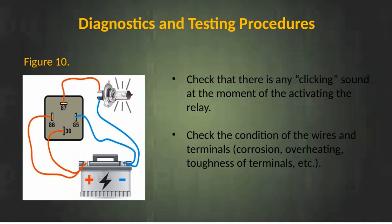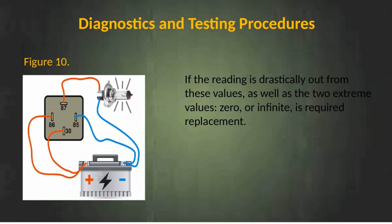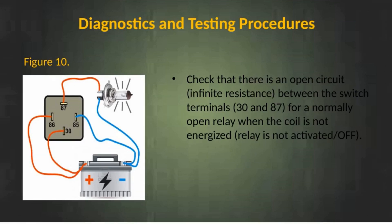Diagnostics and testing procedures. Check that there is a clicking sound at the moment of activating the relay. Check the condition of the wires and terminals for corrosion, overheating, toughness of terminals, etc. Unplug the relay and check the electrical resistance of the coil between pins 85 and 86. The resistance should be roughly between 50 ohms and 200 ohms. If the reading is drastically out of these values — including the two extreme values of zero or infinite — replacement is required. Check that there is an open circuit (infinite resistance) between the switch terminals 30 and 87 for a normally open relay when the coil is not energized.